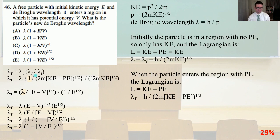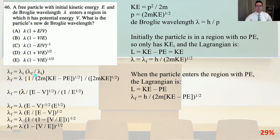So lambda_final equals lambda_initial times sqrt(E) / sqrt(E - V), which simplifies to lambda times sqrt(E / (E - V)), which equals lambda times 1 / sqrt(1 - V/E), or lambda times (1 - V/E)^(-1/2). That is answer E.